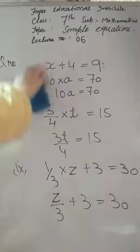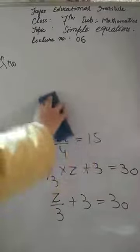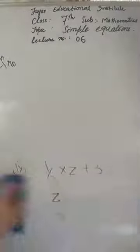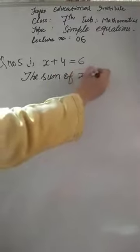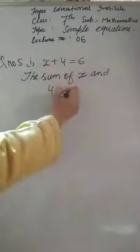Similarly in question number 5, we will see how to change an equation into a sentence. First part: x plus 4 equal to 6. The question says write the following equation in statement form — change this equation into a statement. So we write: the sum of x and 4 is 6.